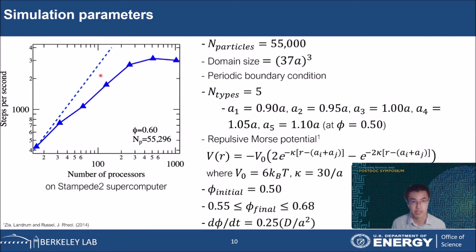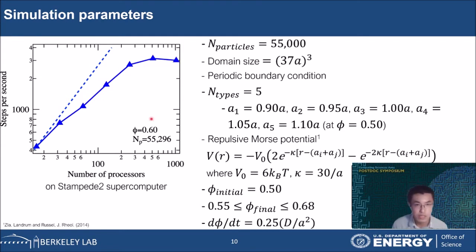Here I also show a scalability plot for this problem on the Stampede 2 supercomputer. It did not scale too well, as the performance deviates from linear scaling at a small number of processors, possibly due to the expensive work required to construct the neighbor list in such a concentrated system. That is part of the reason I want to work with CCSE to see what improvements can be achieved, maybe using GPUs. The domain size is fixed at 37a cubed, which gives a 50% volume fraction that I use as my initial volume fraction before the quench.